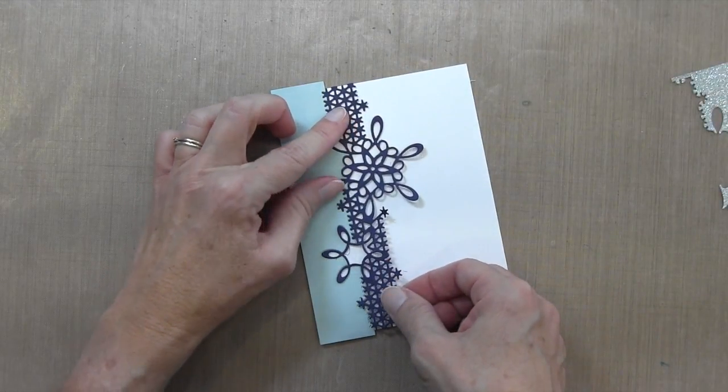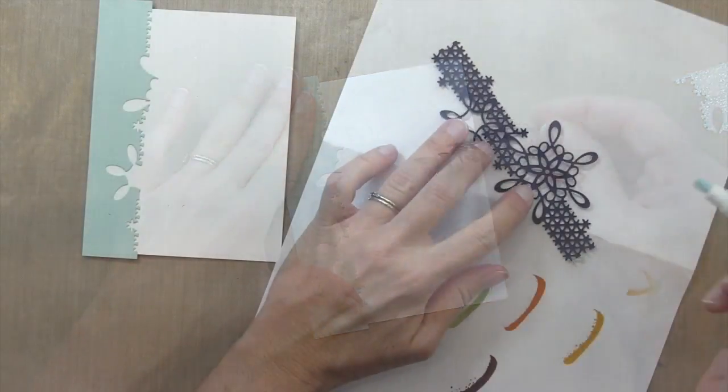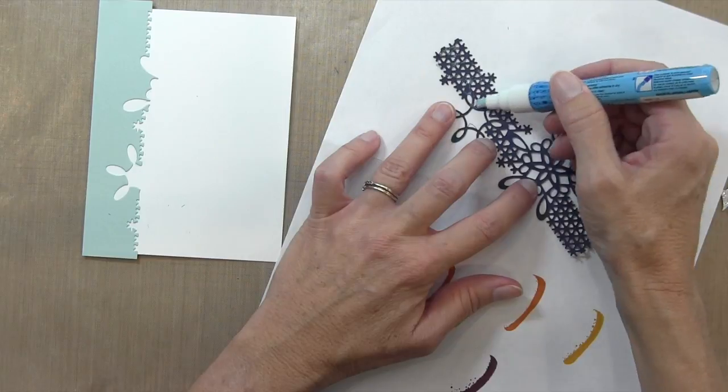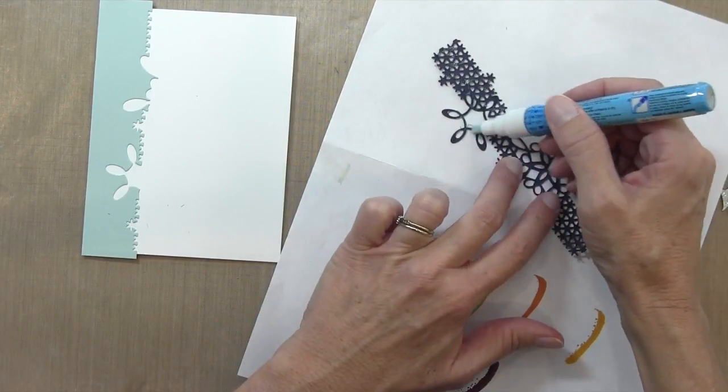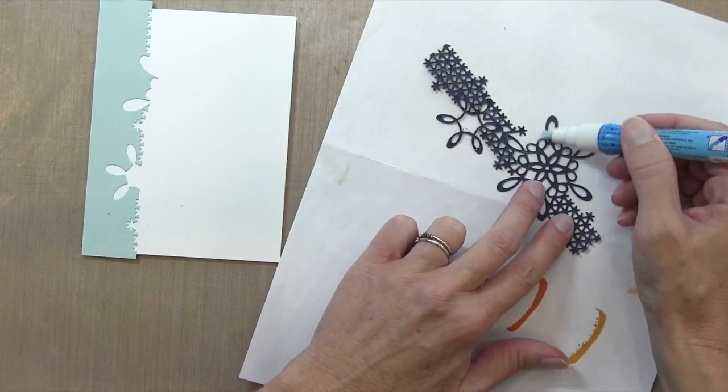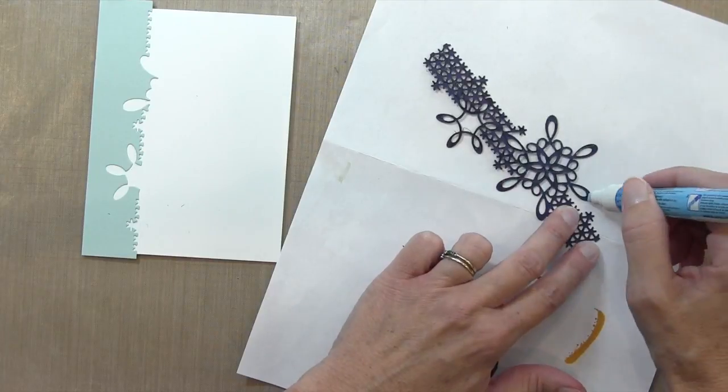I cut that excess on the top and bottom so I'd have enough room just in case I cut my die crooked. My Night of Navy piece is going right against my Soft Sky. To adhere this piece, I'm using my Zig Two-Way glue pen, doing it at a diagonal to get maximum coverage using the chisel tip.